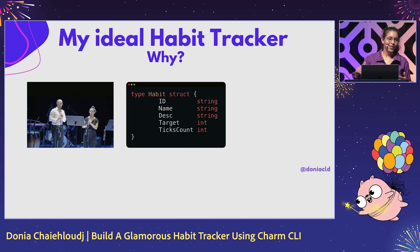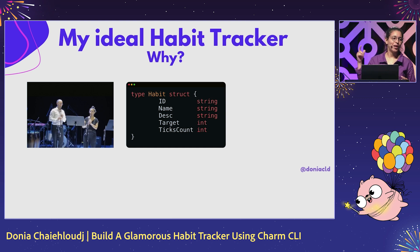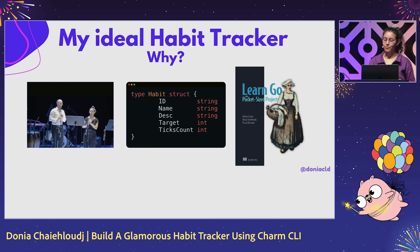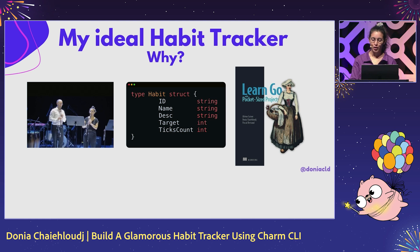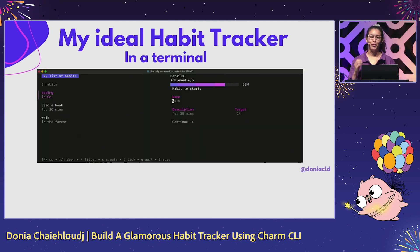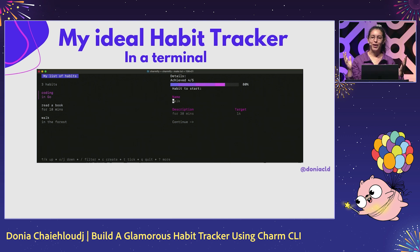So what is a habit? To define it quickly: there is a name, a description, a target — the number of times I want to achieve it during the week — and a tick count, to record each time I actually achieve my habit, like playing the clarinet. In parallel, in the book we wrote a chapter with a habit tracker, but it was a gRPC backend and it was not fun to use. So I wanted a beautiful terminal UI — not a mobile app, because I'm on my computer most of the time — something pop and colorful in my terminal.